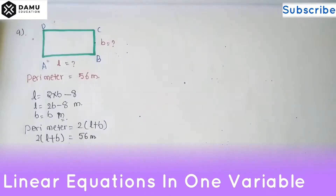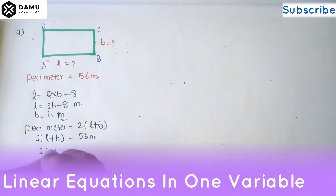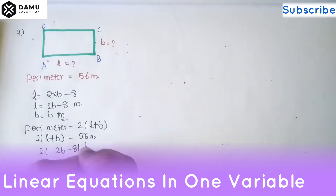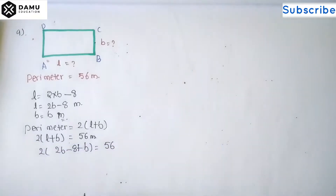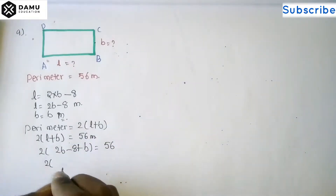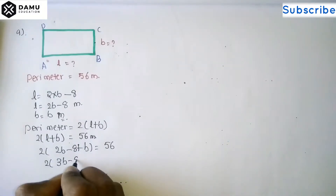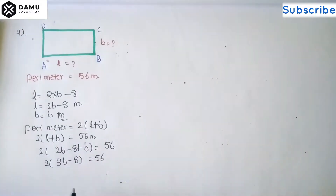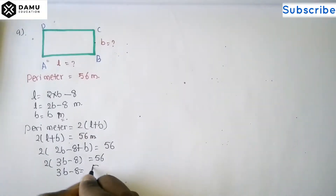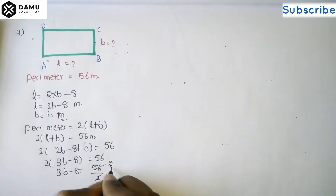Substituting L = 2b - 8: 2 into (2b - 8 + b) = 56. Inside the bracket, 2b + b gives 3b, so 2 into (3b - 8) = 56. Then 3b - 8 equals 56 divided by 2, which gives 28.